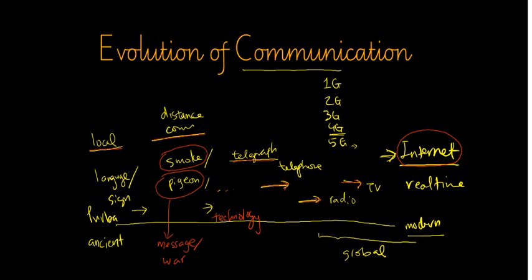For the internet, we started with basic communication — 1G, 2G, 3G — and now we have 4G and 5G. In the very near future, we might move to another higher level of super high-speed internet, maybe 6G. This is how communication evolved from the earliest times until now.